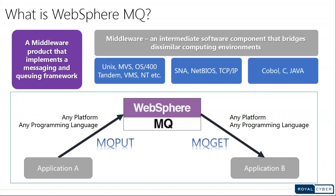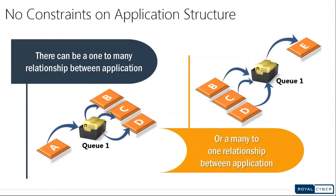WebSphere MQ is used to transmit messages from one application to another application. You can use the simple MQ API calls and configure your application so that applications can connect to WebSphere MQ, put messages on the queue, and get messages from the queue.